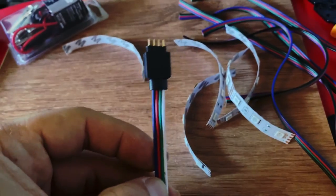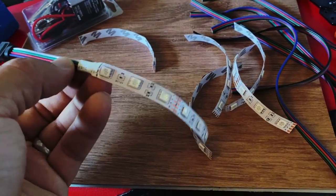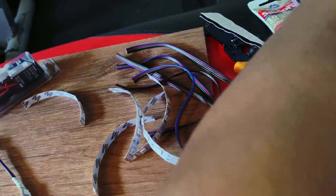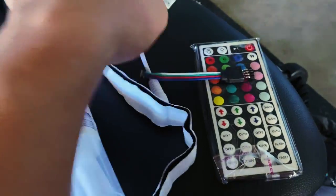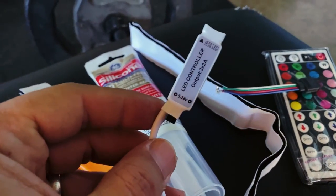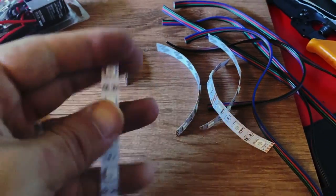So what I have here are RGB LEDs rated at 12 volt, and I've cut them into six LED segments. I have this LED controller that I'll be using with the remote to change the colors.